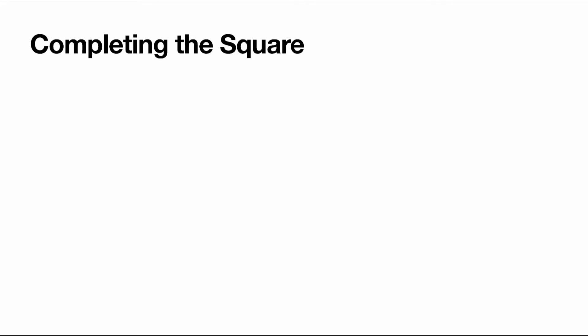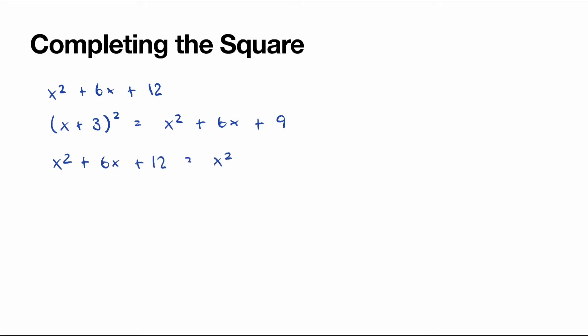For the second example, we have x² + 6x + 12. We have to find a perfect square that contains 6x, and this perfect square will be (x + 3)², which expands to give us x² + 6x + 9. We can write x² + 6x + 12 as x² + 6x + 9, and we have to add another 3. Since we can write x² + 6x + 9 as (x + 3)², we have (x + 3)² + 3. So x² + 6x + 12 written in completed square form is (x + 3)² + 3.